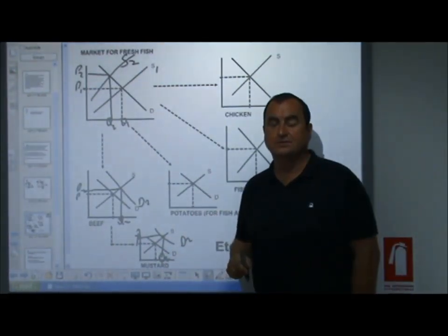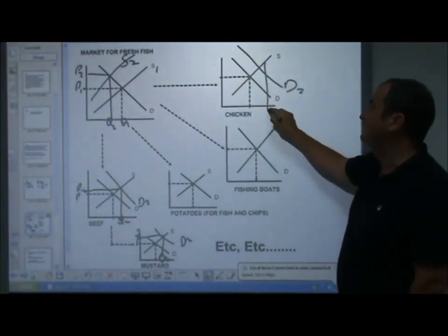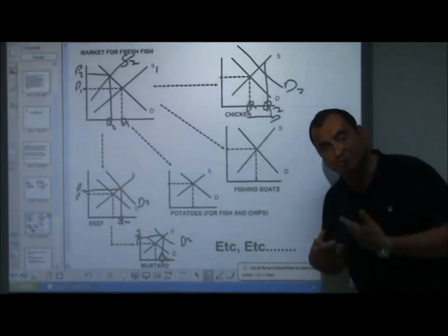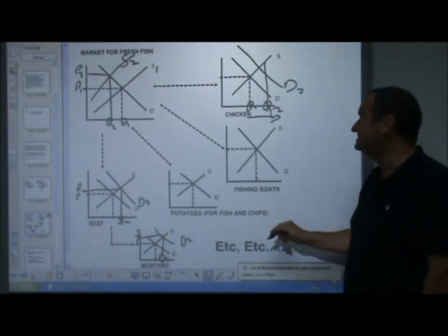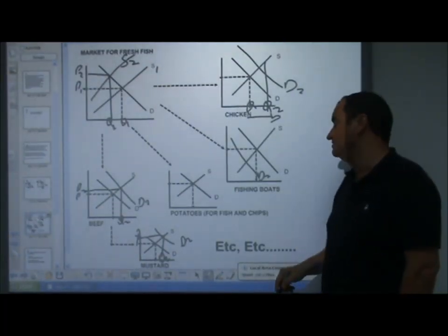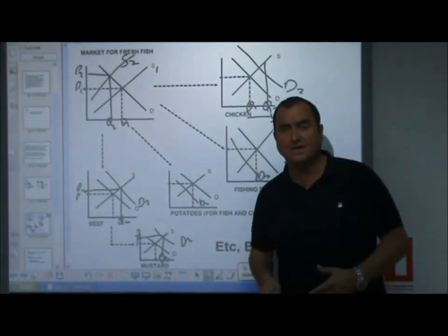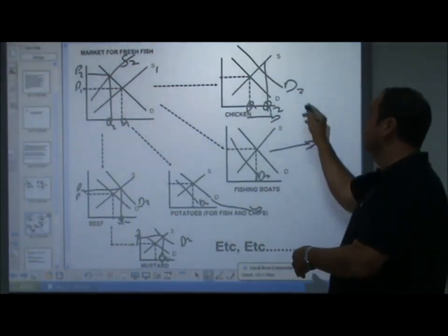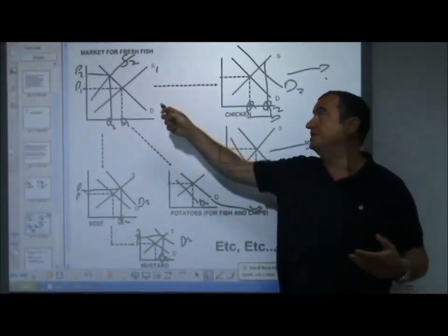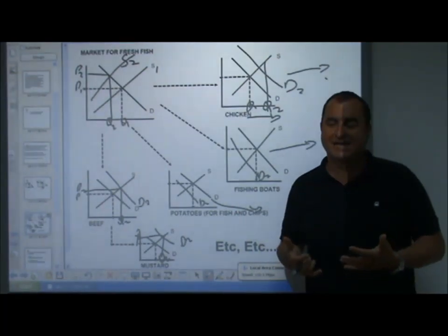Meanwhile, in other markets, there might be an increase in demand for chicken, sending a signal to chicken farmers to increase their quantity supplied. In the market for fishing boats — which are produced by somebody — there will be less demand because fewer fishermen have work. And in the market for potatoes for fish and chips, there might be less demand. So you see it happens across lots of different markets, and even those markets then have reactions in further markets — these ripples spread outwards across the economy when something happens in one market.